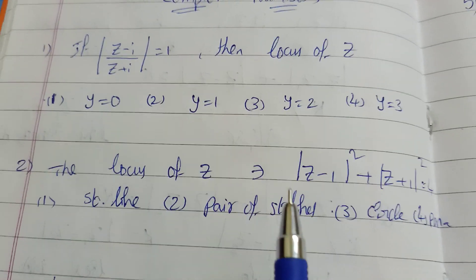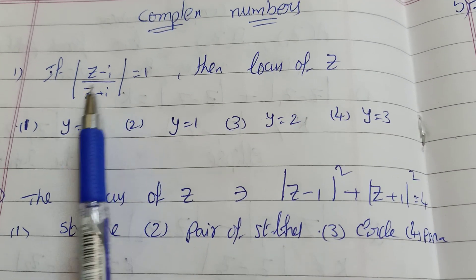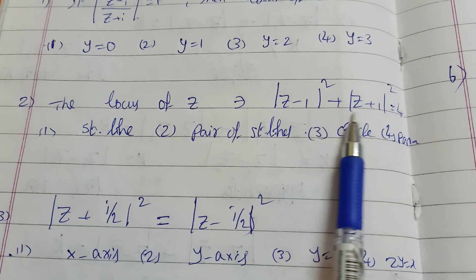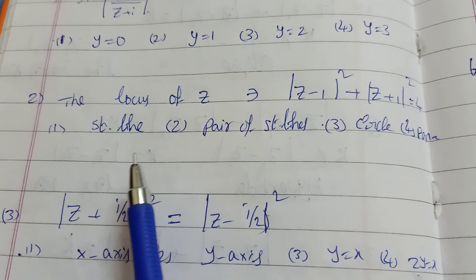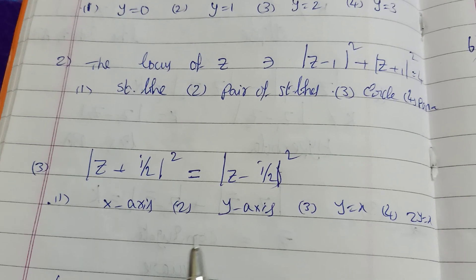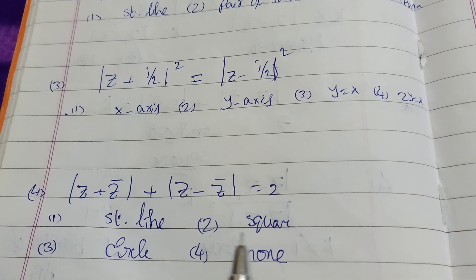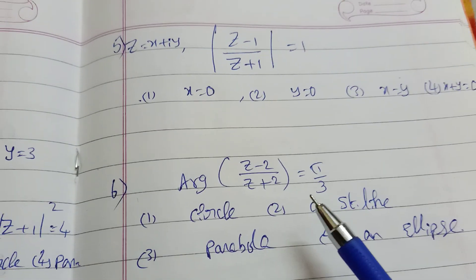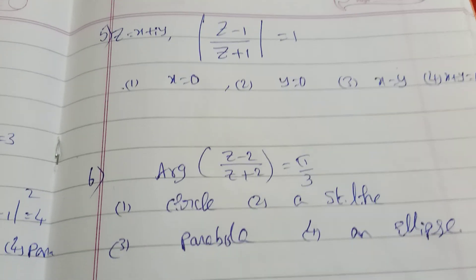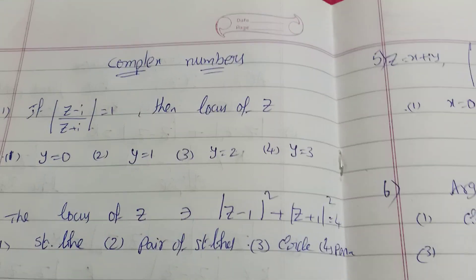I will show you a shortcut here. The modulus of z minus i by z plus i equals 1. I will show you within seconds. I will show you the straight line, circle, parabola — this is a shortcut. This is a circle.